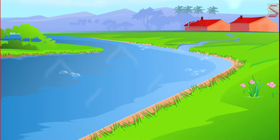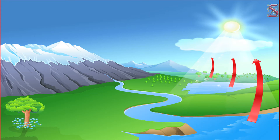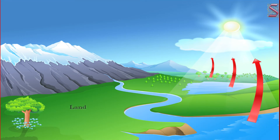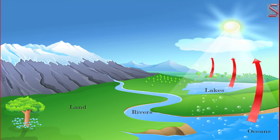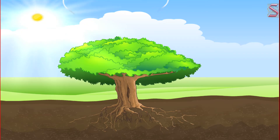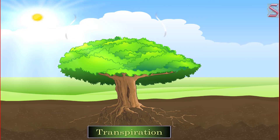Evaporation is the first stage of the hydrological cycle. The water on the surface of the earth reaches the atmosphere through the process of evaporation. In this first stage, water is converted from the liquid to the gaseous state. The heat from the sun causes the water to evaporate from the surface of the earth. Various water bodies like lakes, rivers, and oceans are the main sources that send a constant supply of water vapor. The water from plants also reaches the air through the process of transpiration.